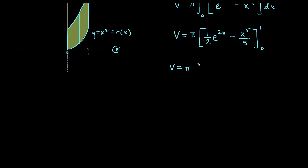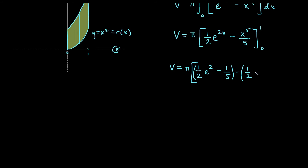Plugging in 1 first: one half times e to the 2 times 1, which is e squared, minus 1 to the 5th over 5, which gives us one half e squared minus one fifth. Plugging in 0: one half times e to the 0, and e to the 0 equals 1, so we get one half times 1, which is one half. The x to the 5th over 5 term gives 0 over 5, which is 0.